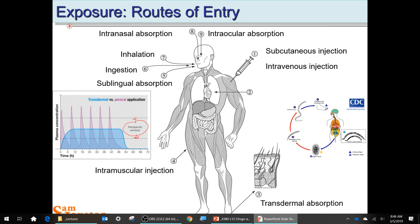The other routes include transnasal — snorting cocaine — and interocular absorption, where something gets in your eye and enters the body.